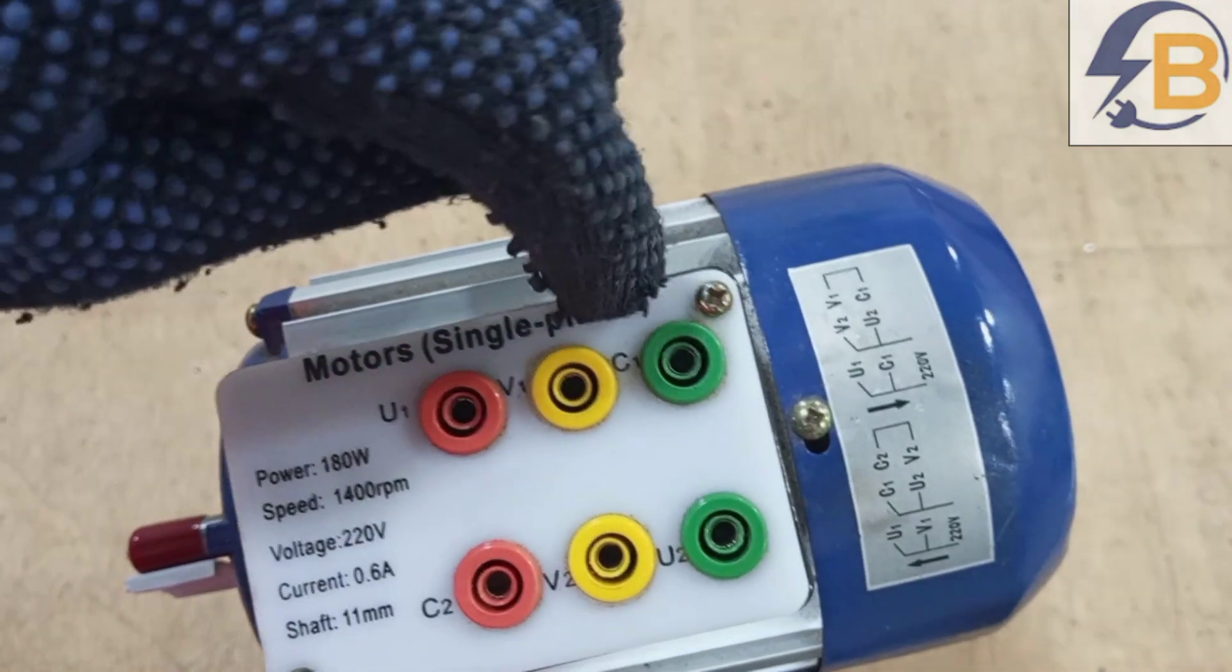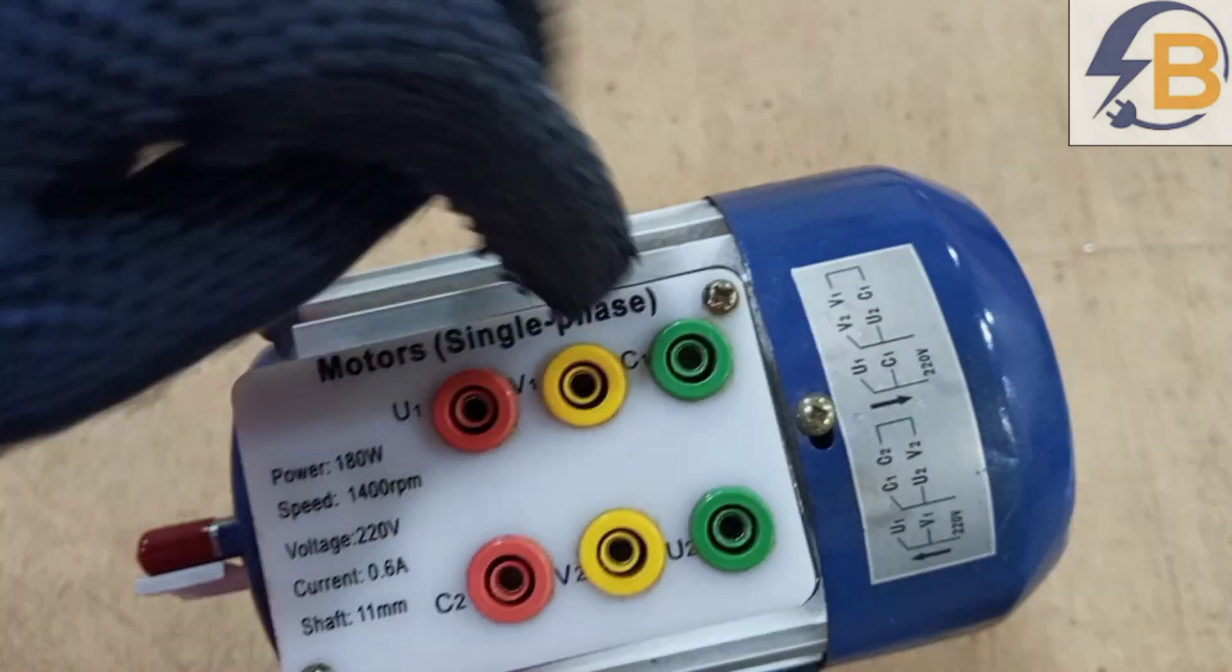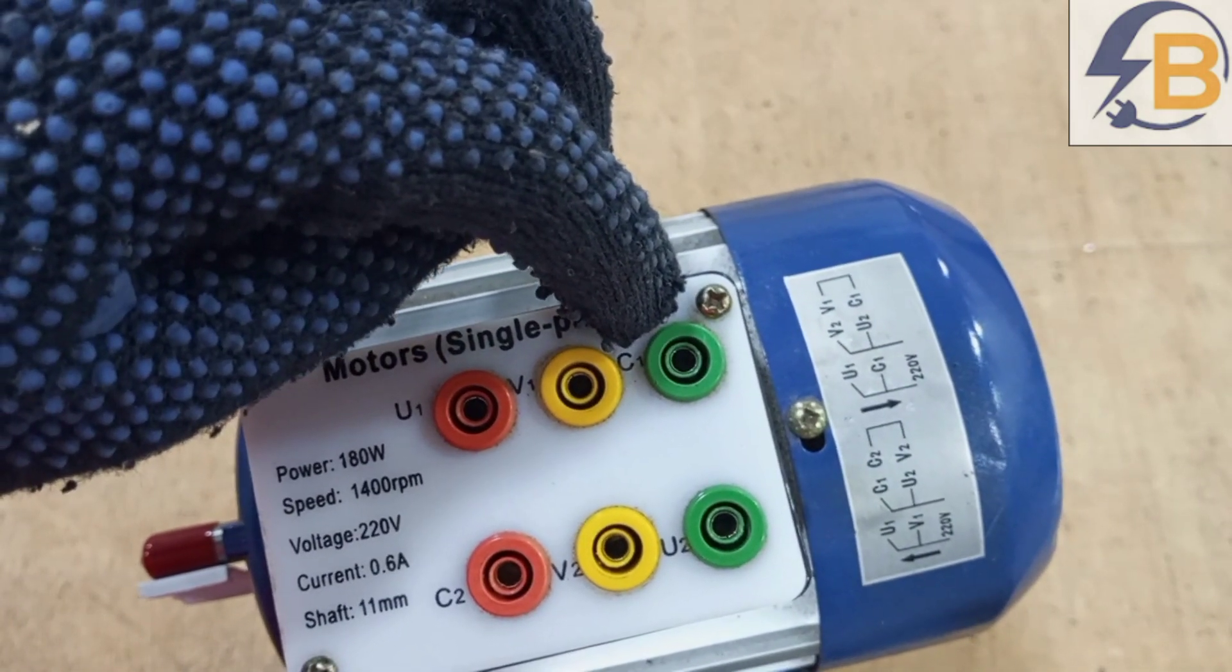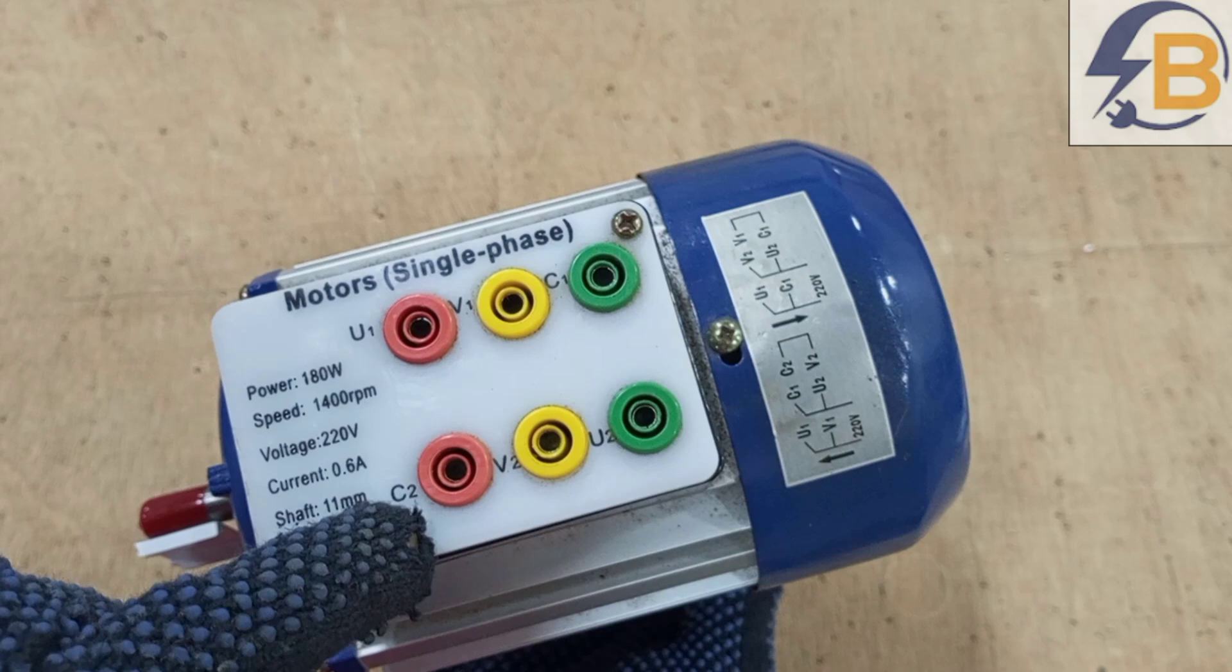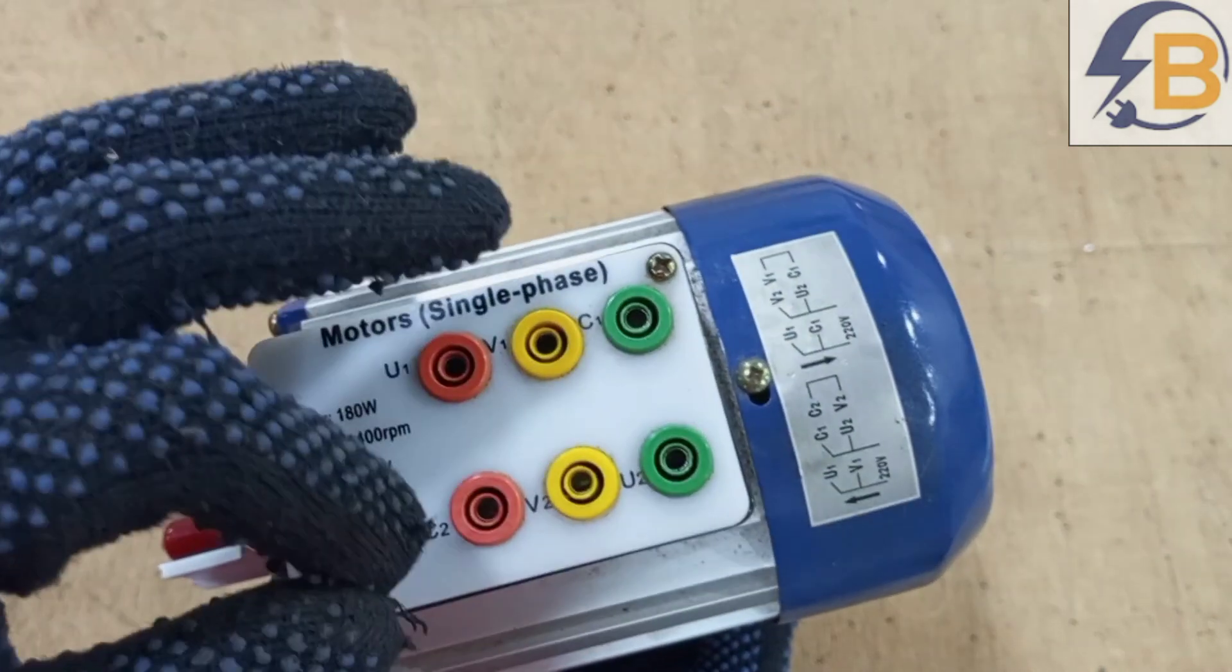The beginning of that is labeled V1, and the end of that auxiliary winding is labeled V2. Now, you can see C1 here, and then C2 here. So C1 is one end of the capacitor, and then the C2 here is the second end or the second lead of the capacitor.